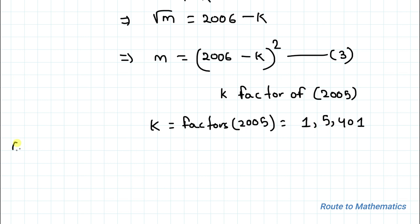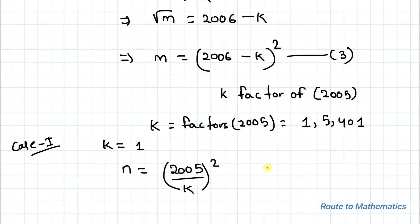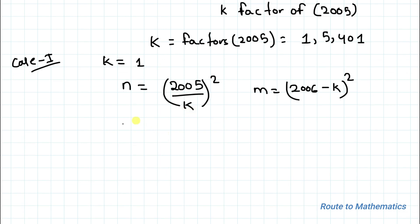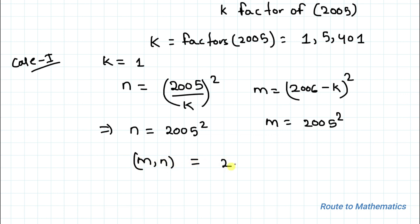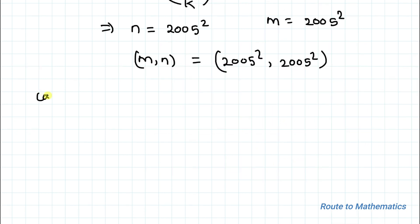Let's find the values of m and n for each value of k. In Case 1, let k = 1. From equation 2, n = (2005 / 1)² = 2005². From equation 3, m = (2006 − 1)² = 2005². So for k = 1, we get m = 2005² and n = 2005².